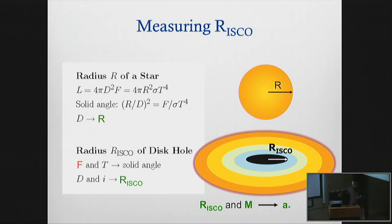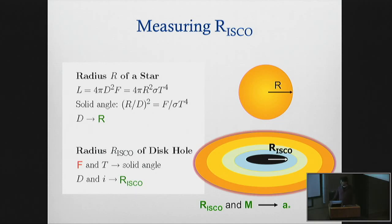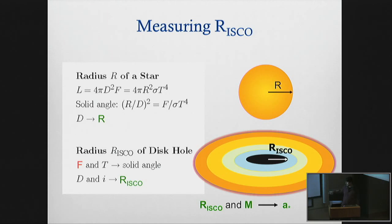These accretion disk systems are analogous but different. Instead of a single temperature, it's a temperature profile. But it's the same principle - we just need to determine effectively a critical area. Instead of having a sphere, we have something shaped like a cylinder. So instead of just distance, we need to know distance and inclination. The ISCO radius comes out in kilometers, and we need a dimensionless spin parameter, so we also need to know mass. If we have an X-ray temperature and can determine flux, and have independent knowledge of distance, inclination, and mass, we can determine the ISCO radius and determine spin.